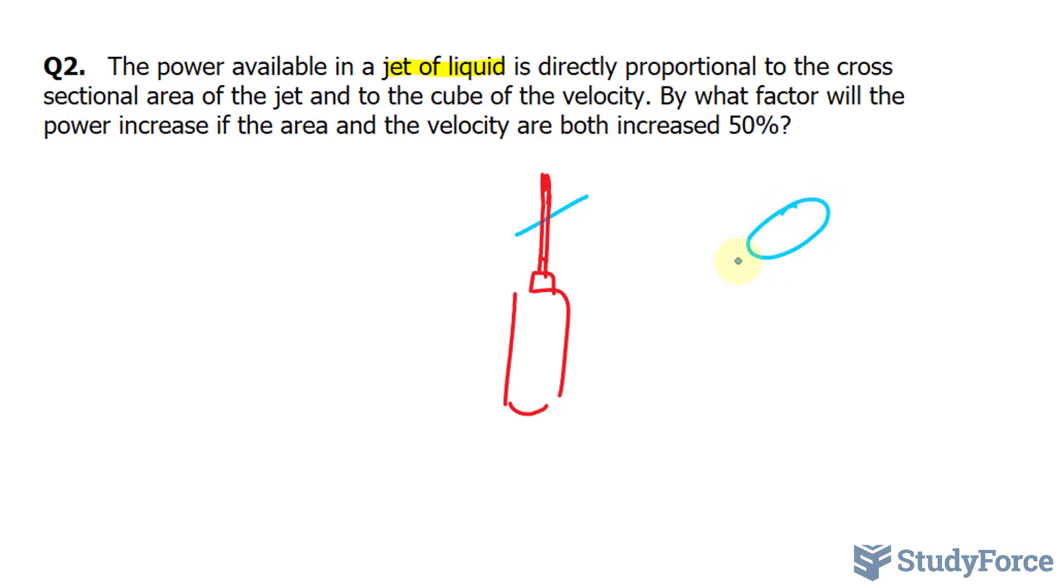They're telling us that the power available in a jet of liquid is directly proportional, so I'll say P for power is directly proportional to the cross sectional area of the jet (I'll call the area A) and directly proportional to the cube of the velocity. Let's call velocity V to the power of 3.